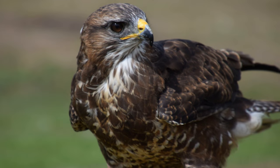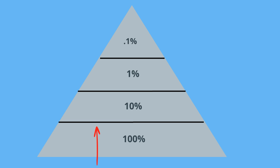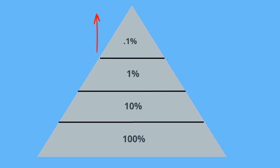Each layer of the energy pyramid is called a trophic level, and as you move up each trophic level, 90% of the energy is lost — much of this to heat — and only 10% is transferred to each layer above it.